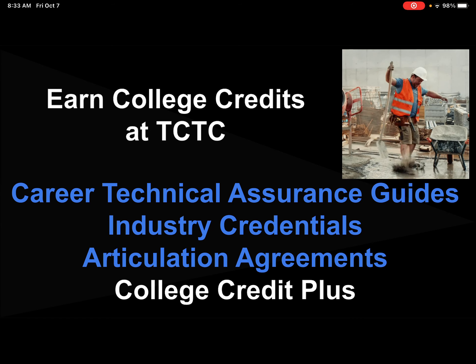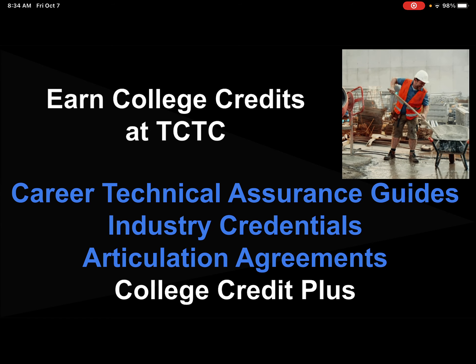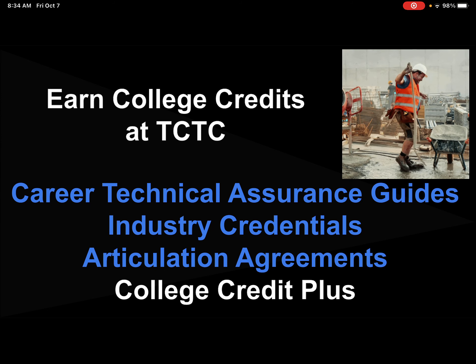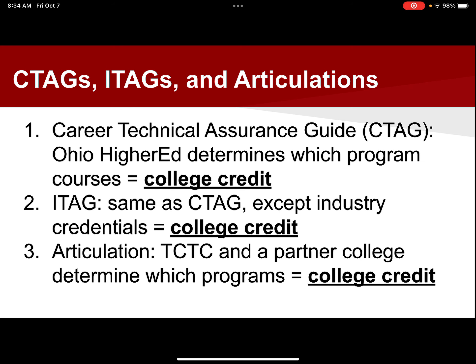As you can see, this guy up here is really happy to come to TCTC because he earned a lot of college credits through his program. Career technical assurance guides are determined by the Ohio Higher Ed Administration — they determine which program courses equal specific college credits. I-Tags are the same as C-Tags, except they involve earning industry credentials, and then those get translated to college credit. And then finally, articulation agreements: that is an agreement between TCTC and a specific college in a specific major or degree program that determines which college credits you can earn through your program here at TCTC.